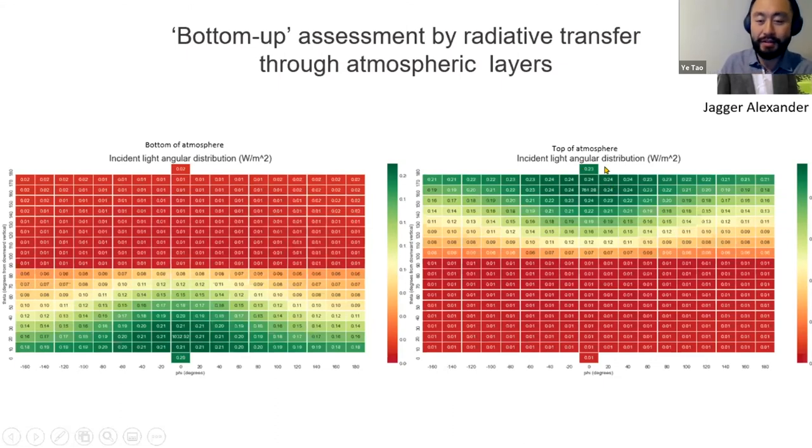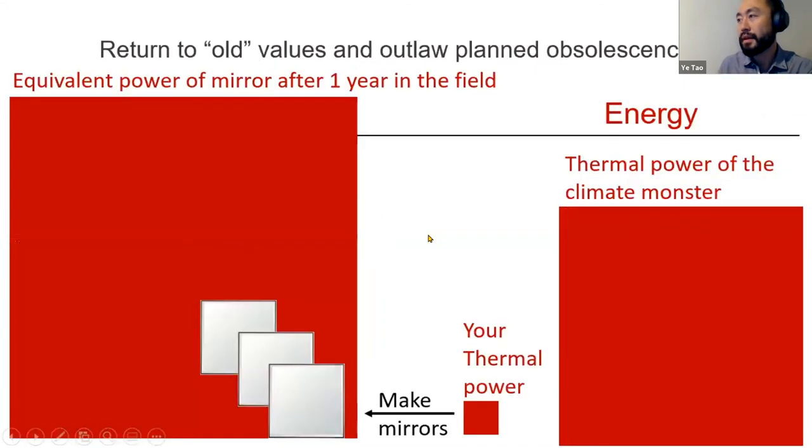When this light interacts with the mirror and goes out of the atmosphere, roughly 70 to 80 percent of the power is ejected into empty space. How do mirrors help us defeat this climate thermal monster? It's this little power that you have. What we can do is use this heat to make mirrors. When mirrors are installed outside, they will continuously eject solar energy, preventing the heat of Earth. When this process is integrated over a year, this is how much thermal power equivalent would have been ejected by the mirror produced by this much thermal energy. We see this dramatic amplification is the reason why we can vanquish something that's much larger.